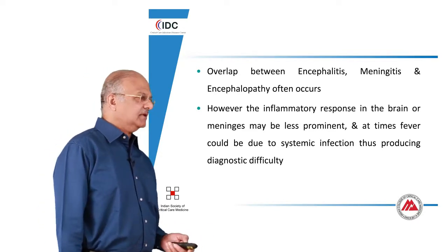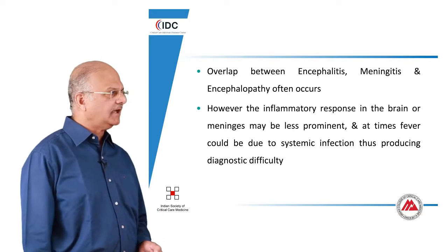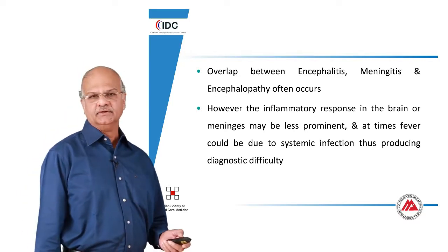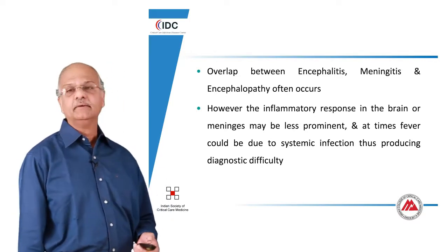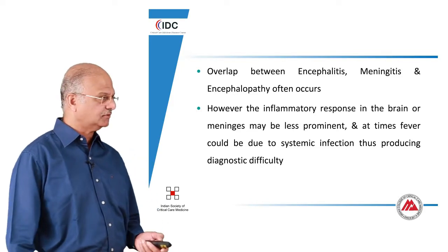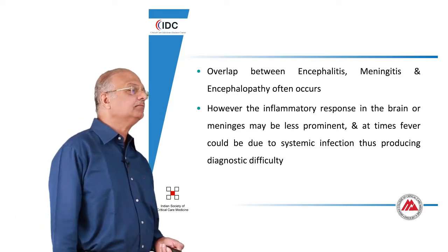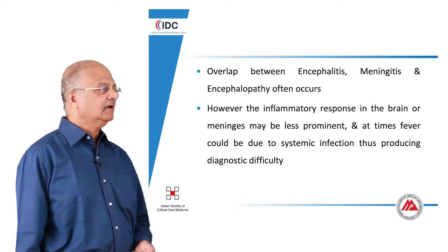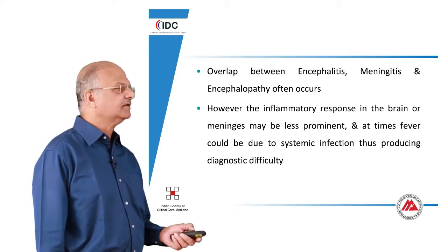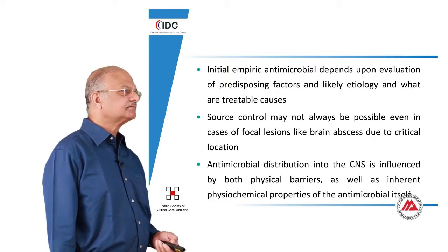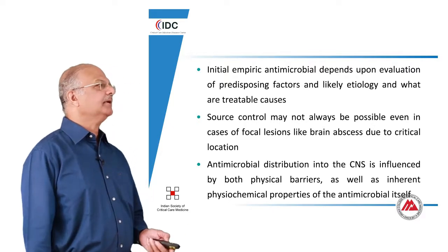There are also other confounding variables: sometimes the inflammatory response in the brain or in the meninges may be less prominent, which may have something to do with the immunocompromised state of the host. Sometimes fever could be due to systemic infection, which can also add to the diagnostic difficulty.